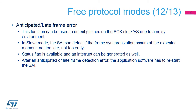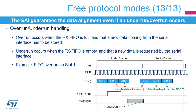The receive mute mode can be helpful to detect an amount of consecutive slots having all data reset to zero. The anticipated or late frame error detection function increases the interface's reliability by detecting unexpected frame synchronization misalignment. A status flag is set, and an interrupt can be generated as well. The application software will then have to restart the SAI interface. The SAI guarantees the data alignment, even if an underrun or an overrun occurs.